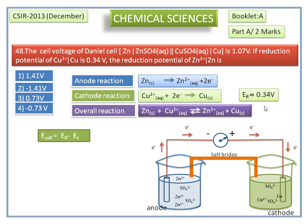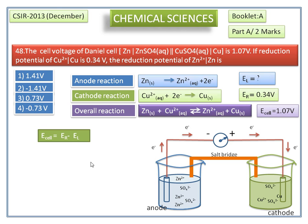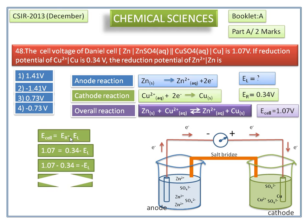The cell voltage of the Daniel cell is 1.07 volts. Substituting these two values into the equation E_cell = E_R − E_L, we get E_L = −0.73 volts. So the reduction potential of Zn²⁺/Zn is −0.73 volts.